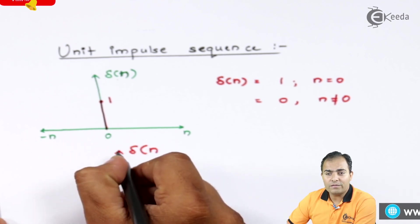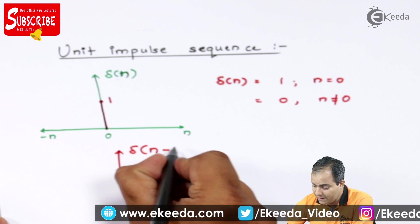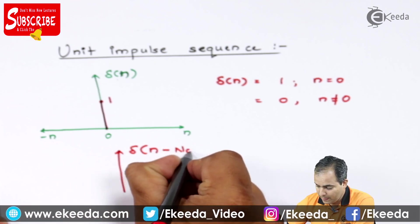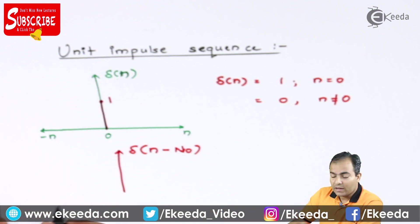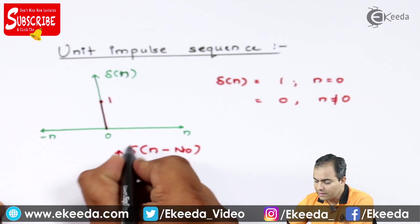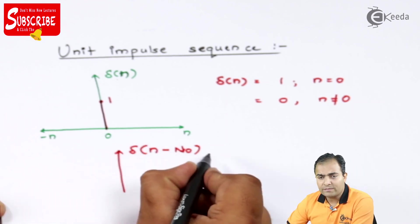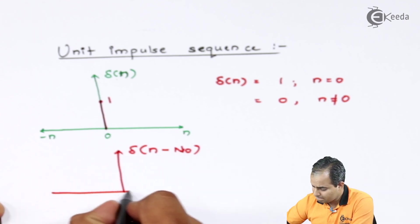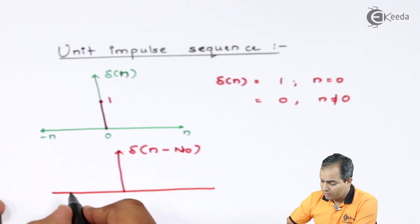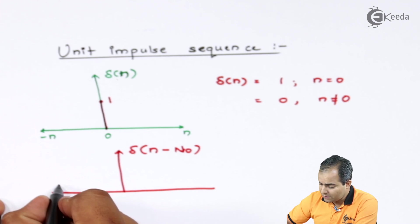This is δ(n) which is delayed by, let's say n₀. n₀ is any integer value. If we delayed this graph or advance this graph by some value, then you will get this type of sequence.